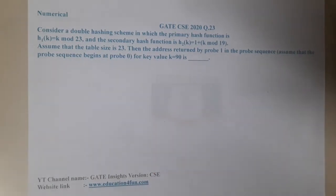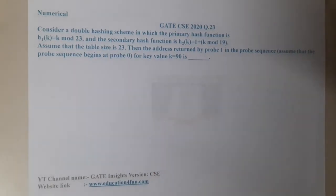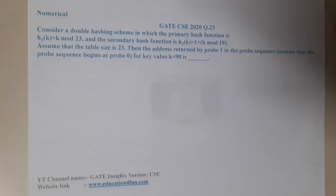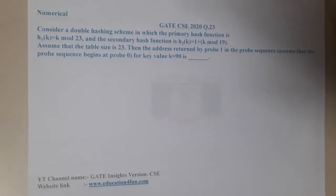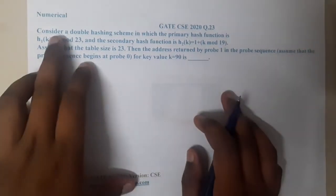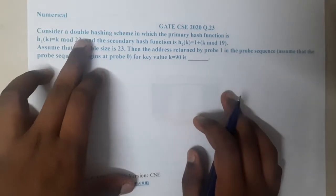Hello guys, we are back with our next lecture. In this lecture, let us go through the next question that is GATE CS 2020 question 23. The question is considering double hashing.